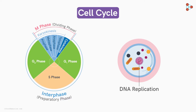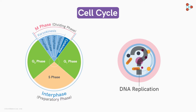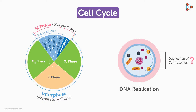Among all the organelles, the duplication of one organelle is equally important as the replication of DNA — and that organelle is the centrosome. The centrosome contains centrioles which form the spindle fibres needed for separating sister chromatids later.